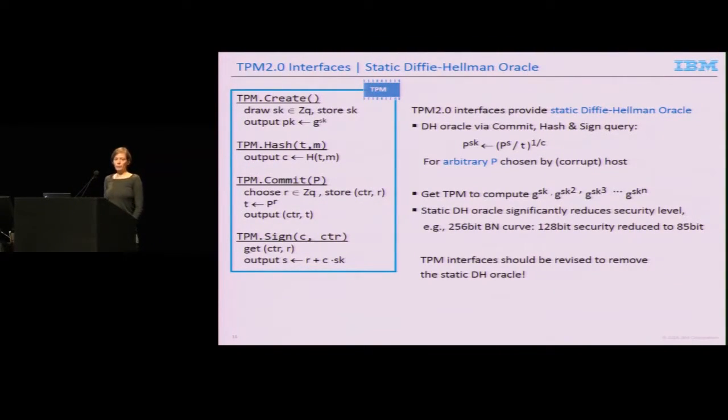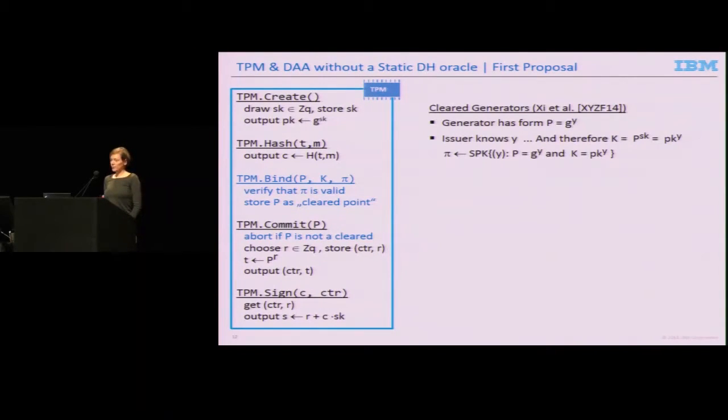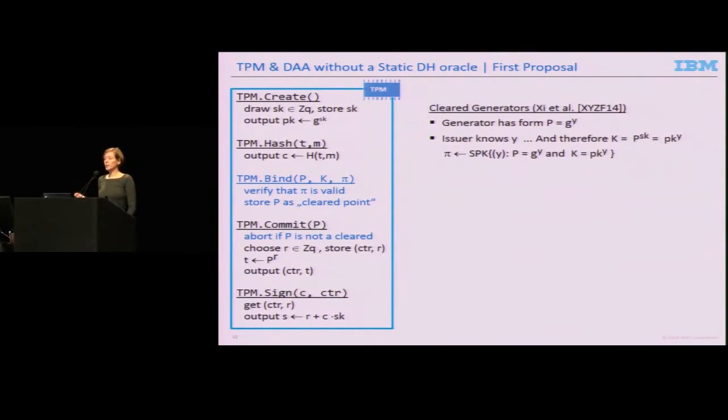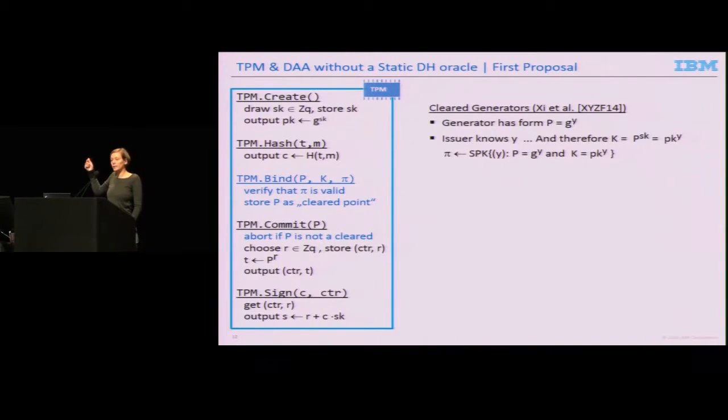The TCG asked us, if we have provably secure protocols that do not require the TPM to be a static Diffie-Hellman oracle anymore, how should they look? To answer the question, we built on work by Xie et al. who showed that in DAA protocols, the generators often have a very specific form: P equals G to the Y, where the discrete logarithm is known to the issuer. That's the secret key of the issuer. If the point P has such a form, it cannot be used for these attack things I showed you earlier. If we can be sure the TPM only receives points of that structure, we can securely use those points. The idea is to let the issuer prove that he has chosen P in that particular form using a zero-knowledge proof. He can compute P to the SK himself by simply taking the public key of the TPM and raising it to the discrete logarithm of the point.